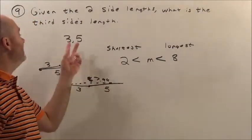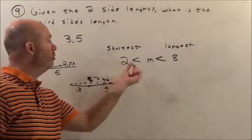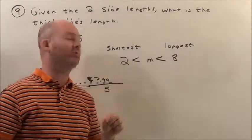So we know, again, the easiest way, we subtract them, 2, add them, 8, our measurement must be between there.